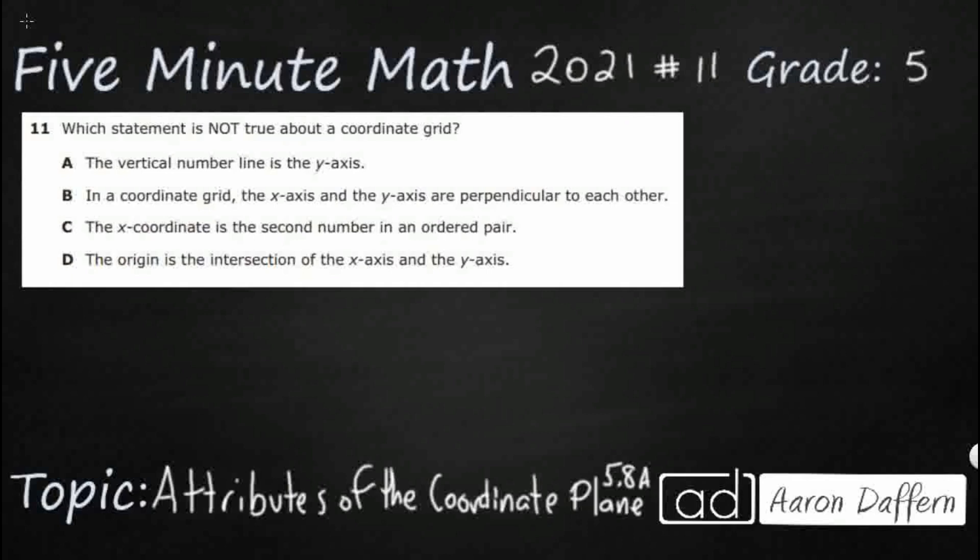So, we have four statements. We need to find one that is not true about a coordinate grid.